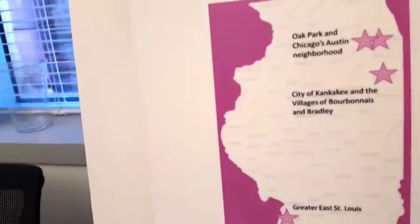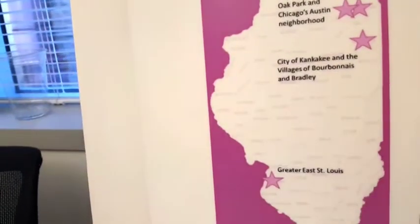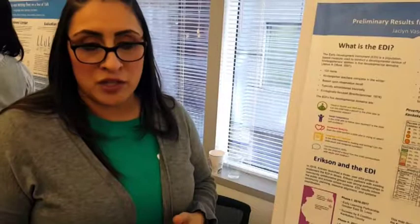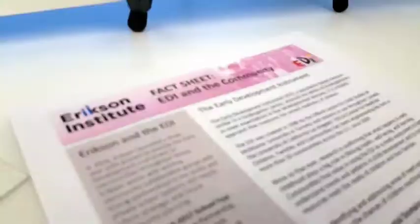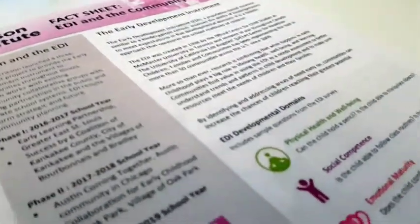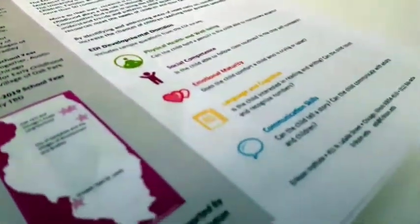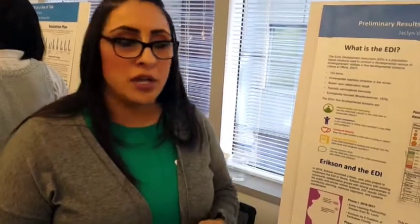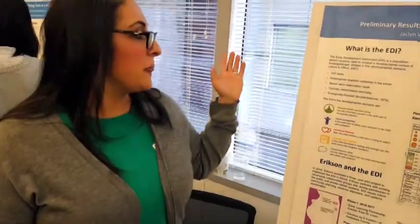We're currently in Oak Park and the community of Austin inside Chicago. The Early Development Instrument measures five key domains: physical health and well-being, social competence, emotional maturity, communication with general knowledge, and cognitive and language skills.